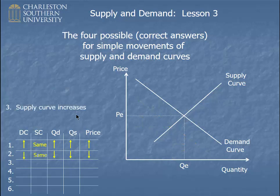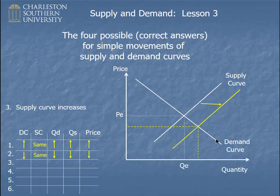For a supply curve increase, the supply curve shifts out to the right. We establish a new equilibrium out here, and all that's left to do is describe what happened. The supply curve increased, the demand curve in this case stayed the same, quantity demanded and quantity supplied both increased, and in this case the price decreased. Filling in the chart, it would look just like that.